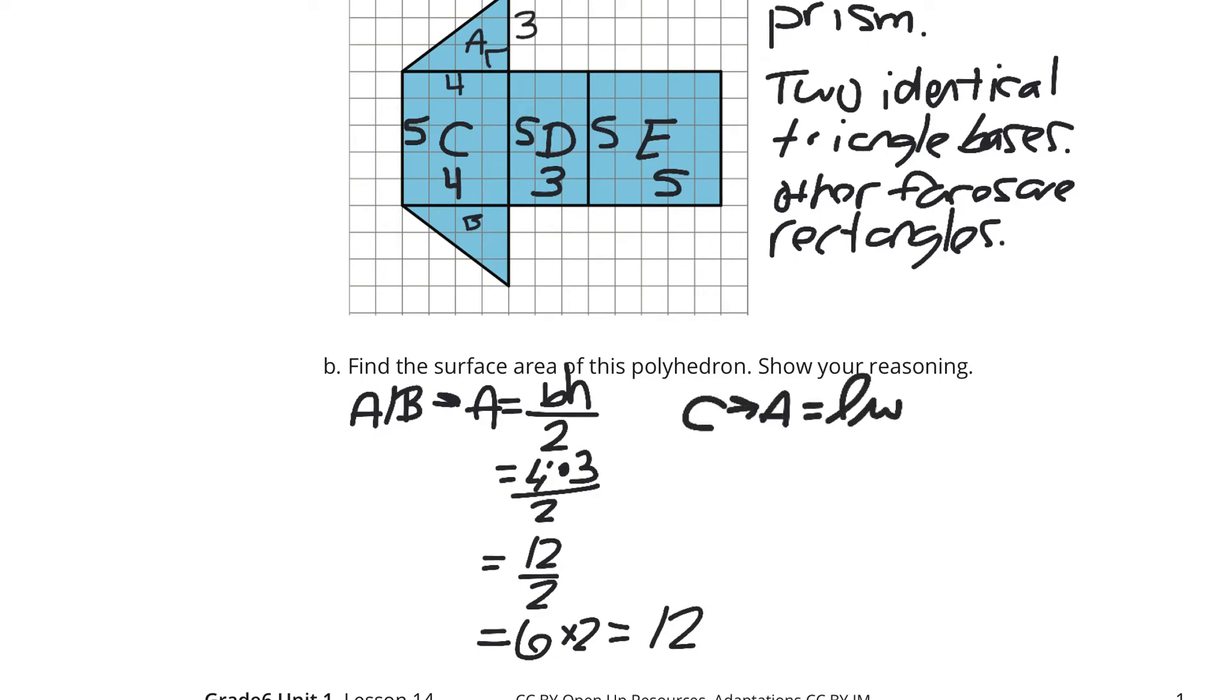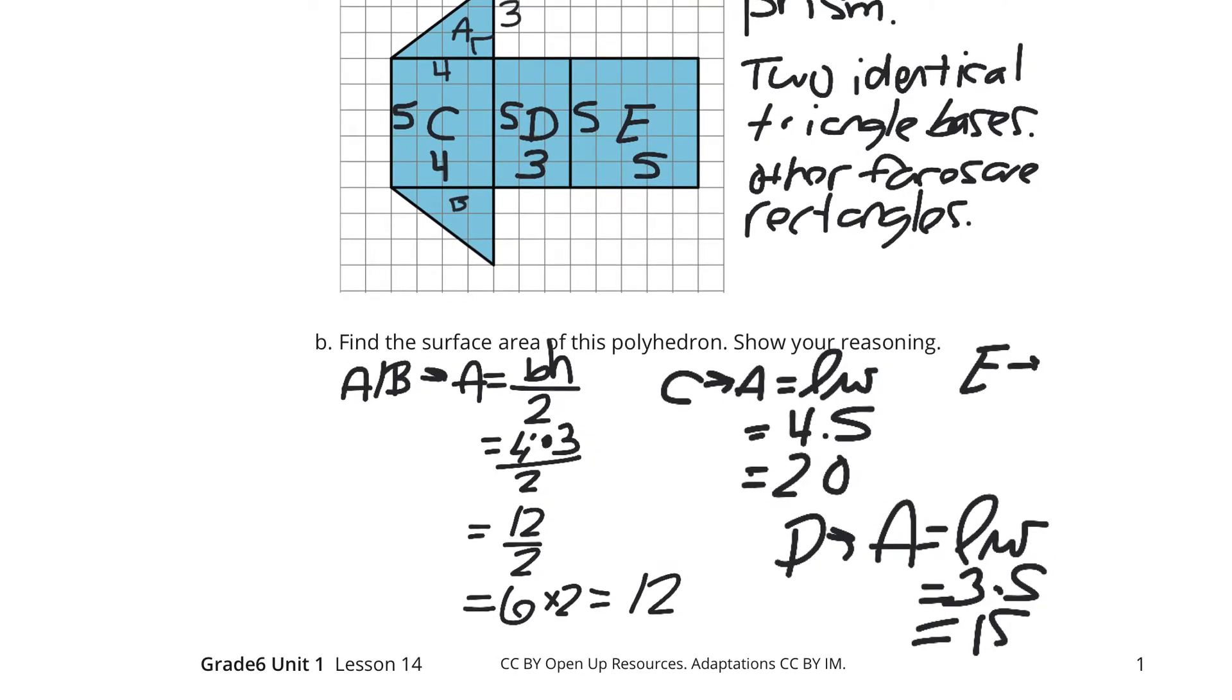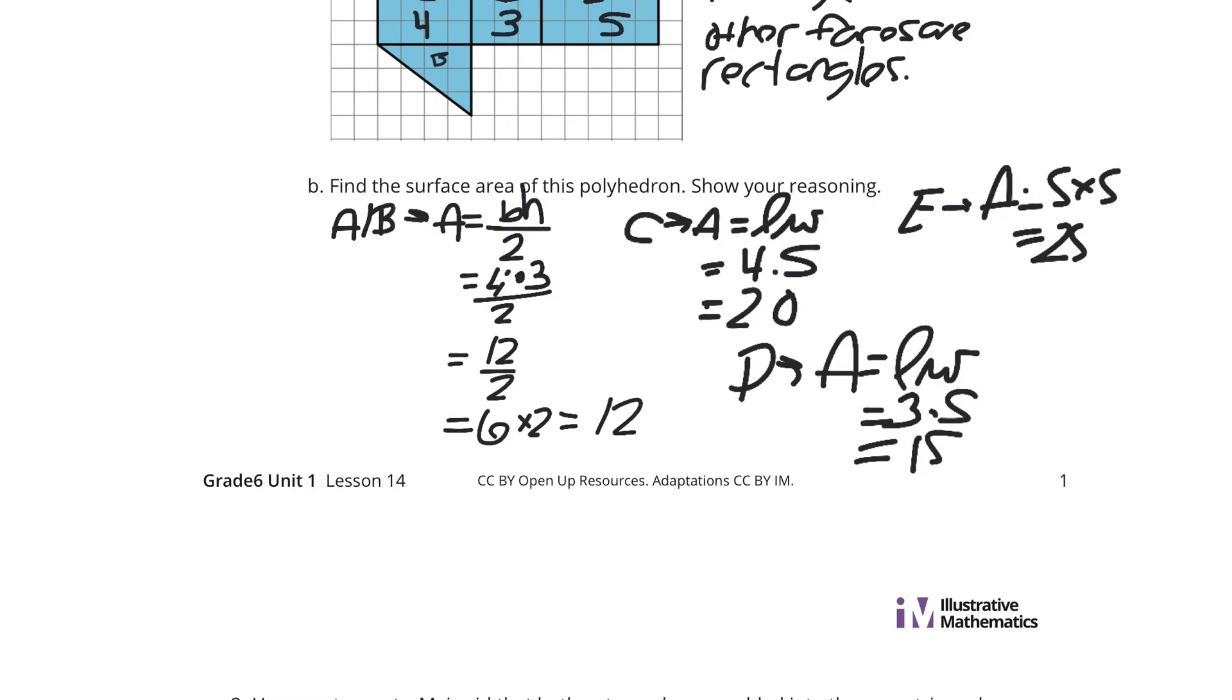And we'll go find the area of these three rectangles so we can add it up. C, our area is length times width for a rectangle. So 4 for the length, 5 for the width. 4 times 5 is 20. C, our rectangle D, area will be length times width again. We'll have 3 times 5, which is 15. And lastly, rectangle E, area is still length times width, which is 5 times 5, which is 25.